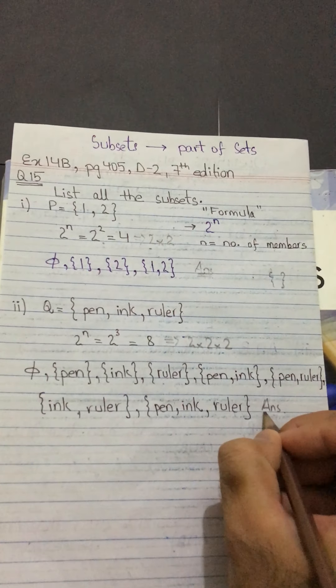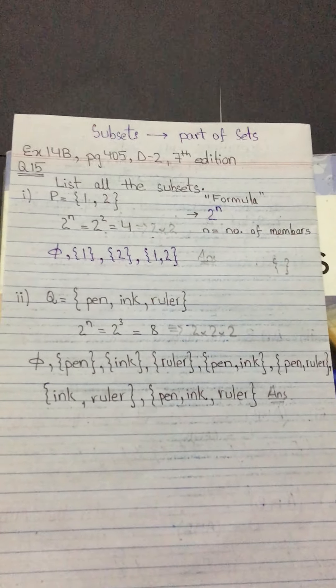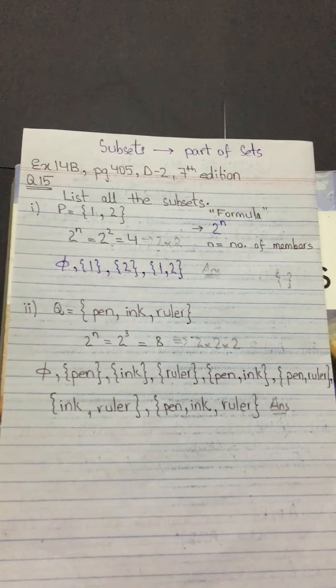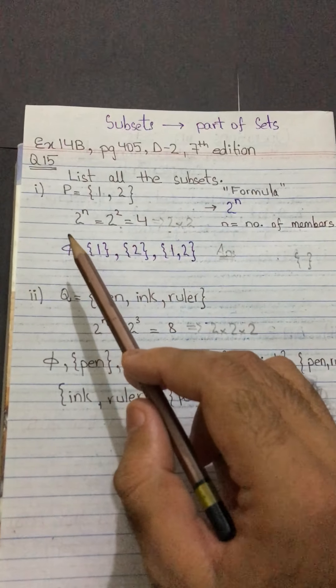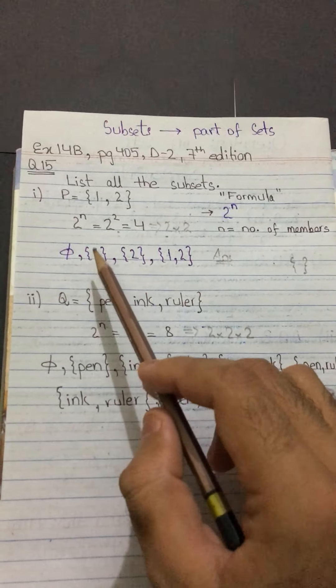You have to memorize this formula — it is very simple: 2 to the power n, where n is the number of members. First identify how many subsets will be formed, then start listing them. The rule is: start with the empty set, then list members one by one, then make pairs of two, then pairs of three, and so on. The first is the null set and the last is the original set.